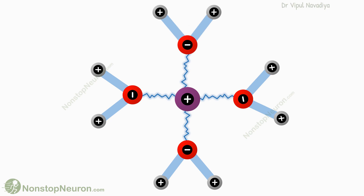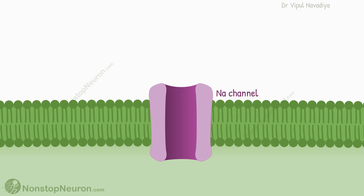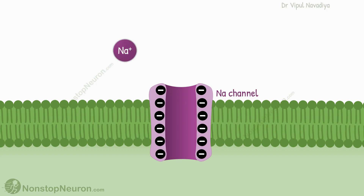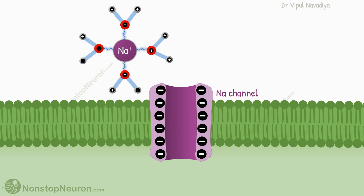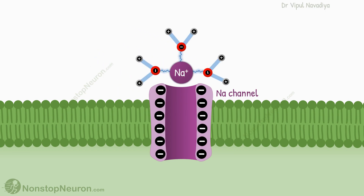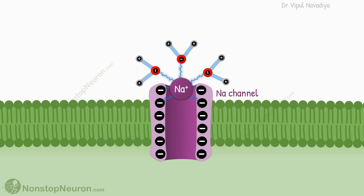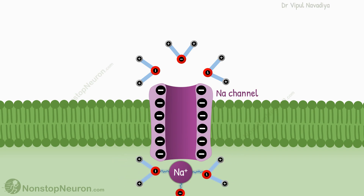Now we can see why sodium channels are highly selective for sodium ions only. This is a sodium channel — its inner surface is lined with negatively charged amino acids. In the surrounding fluid, we have a sodium ion with water molecules weakly bound to it. During its random movement, let's say it comes close to this channel. The negative charge on the inside of the channel pulls the positively charged sodium ion into the channel. Its bonds with water molecules break, and the free sodium ion enters the channel. From here it can cross the channel, and on the other side it again binds with the water molecules located there. Thus, the sodium channel allows the passage of sodium.